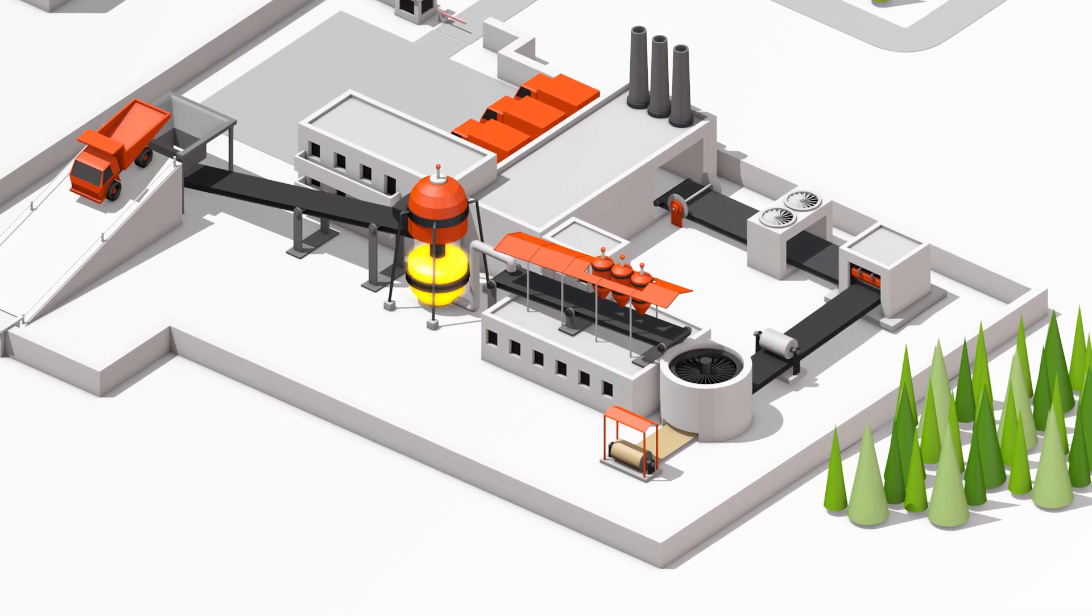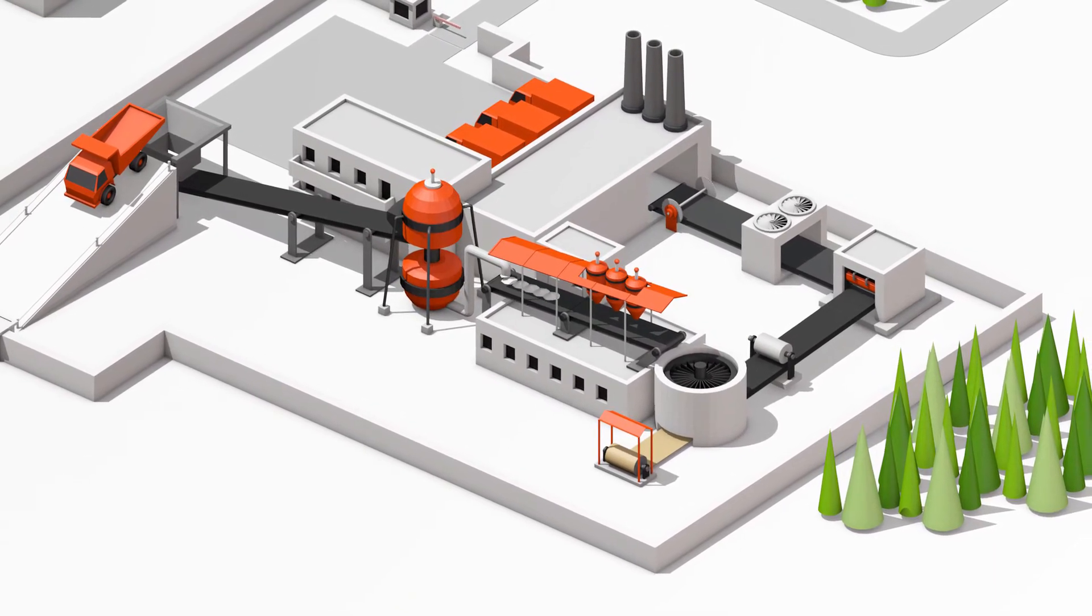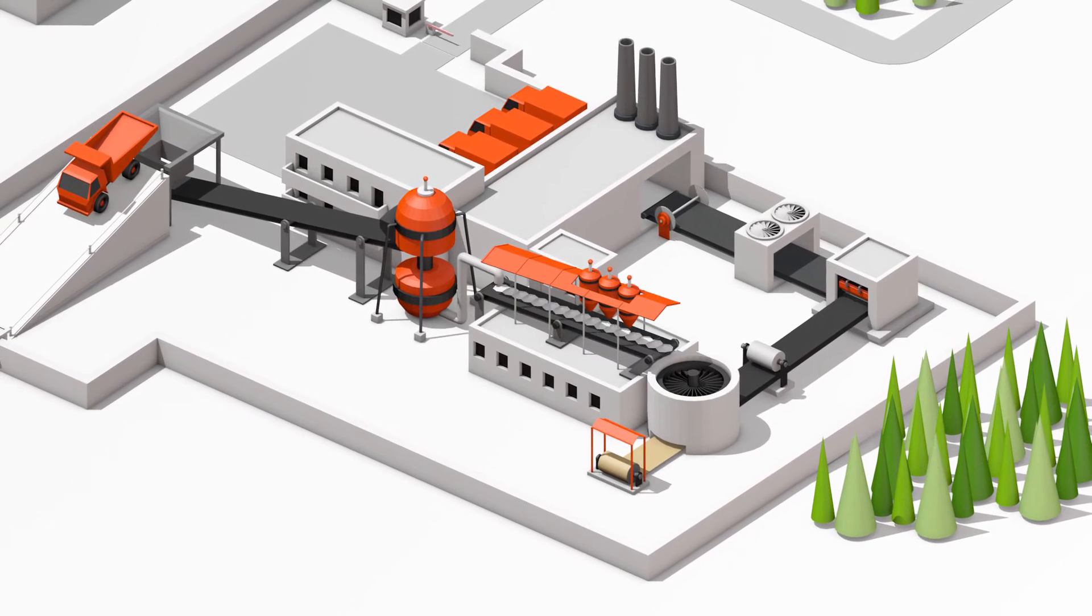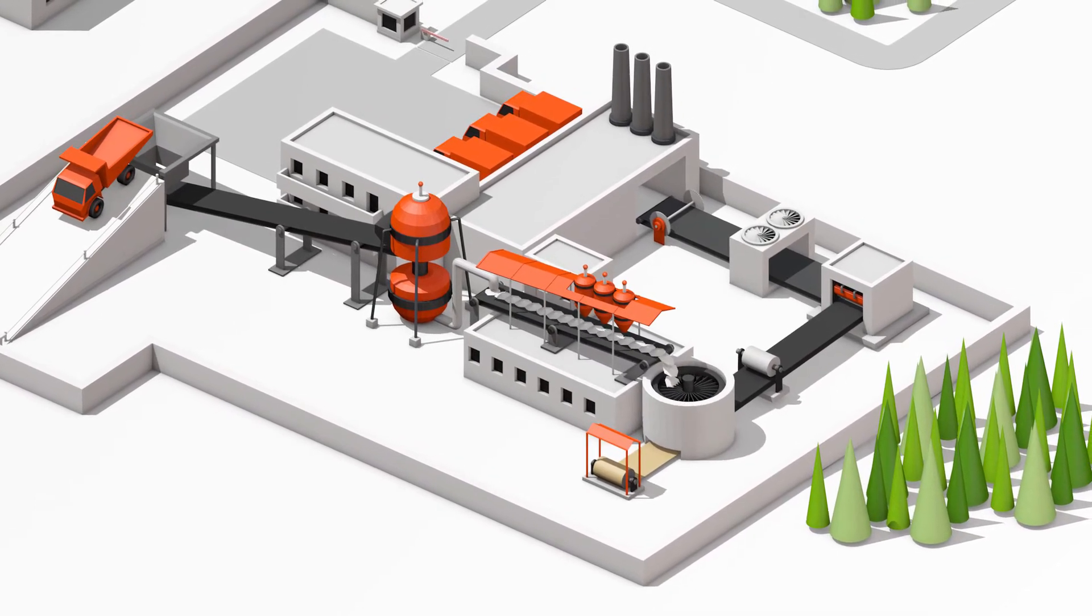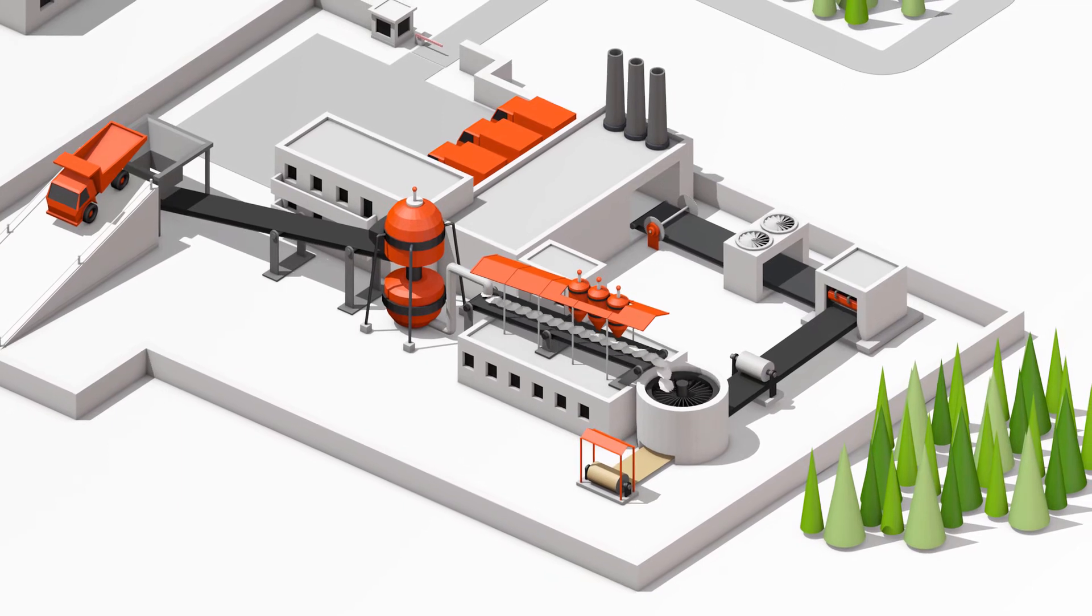After a cooling process, a screw conveyor transports everything to a mixer. In just a few seconds, we place the plaster in water and add several additives.